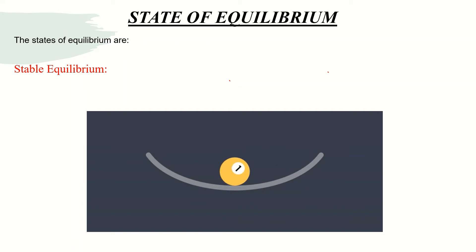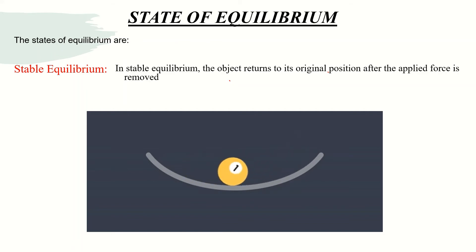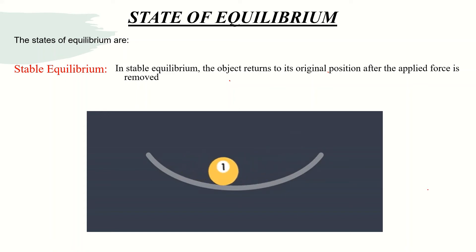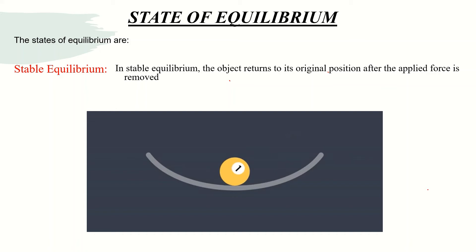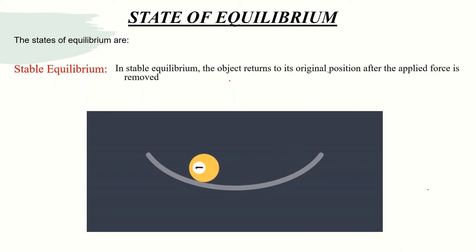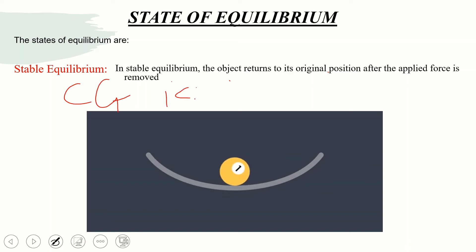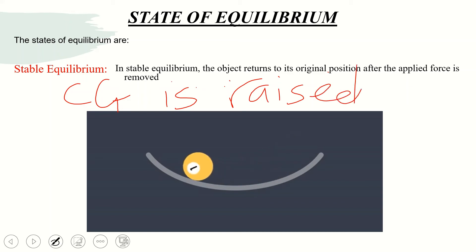For stable equilibrium, as you can see from this video, when force is applied to the object, the object moves away from its original position, and when the applied force is removed, the object returns to its original position. This is called stable equilibrium. For stable equilibrium, the center of gravity is raised.